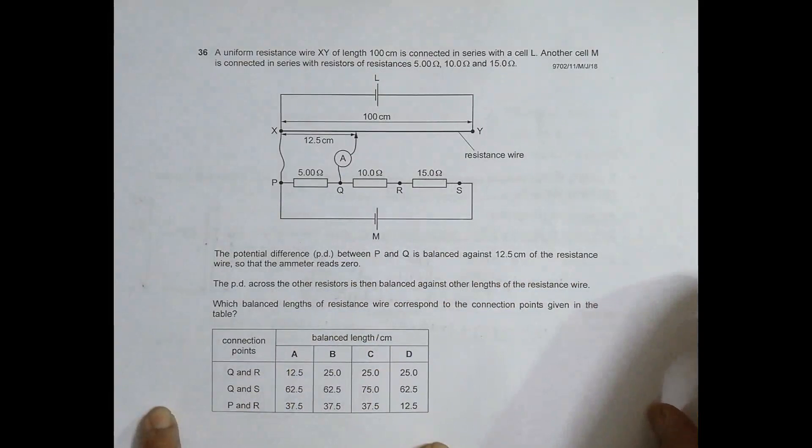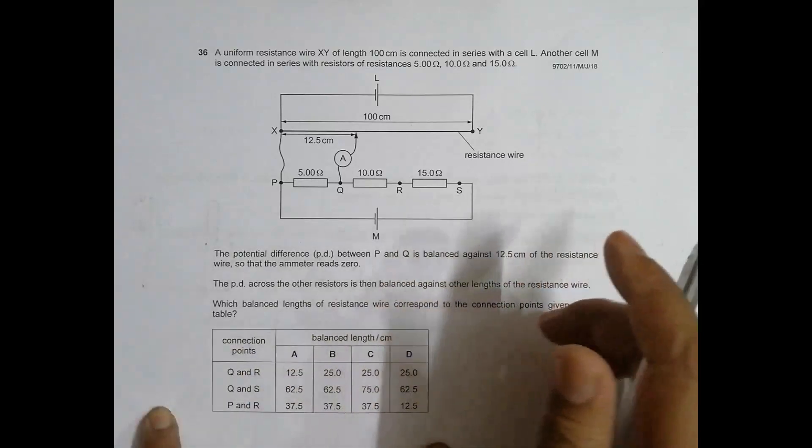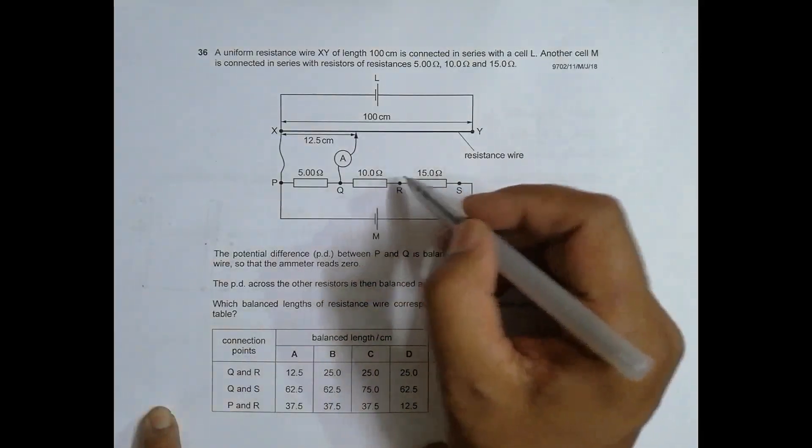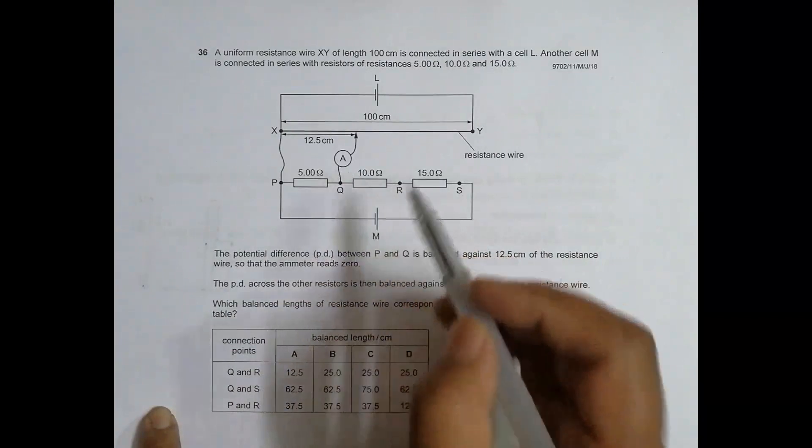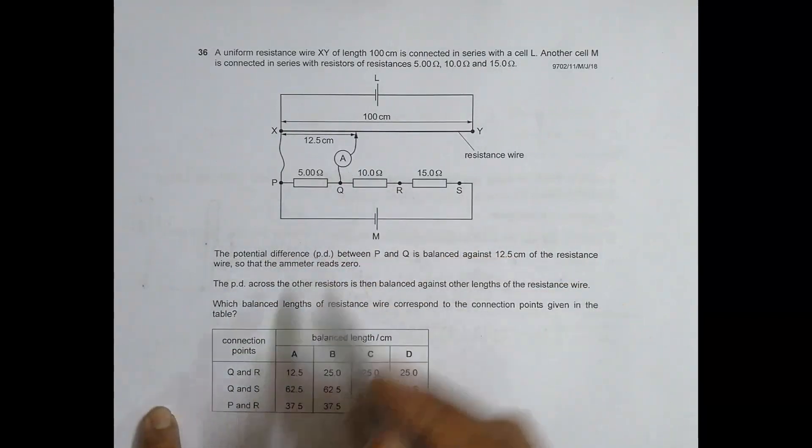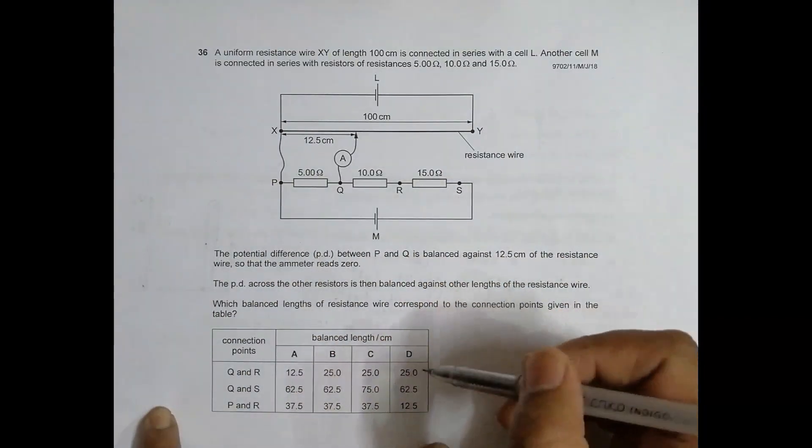The PD across other resistors is then balanced against other lengths of the resistance wire. Since the resistors are different, the lengths will be different also. The balance lengths correspond to the connection points given in the table. We connect across several points: Q and R, Q and S, P and R, and obtain several balance lengths.